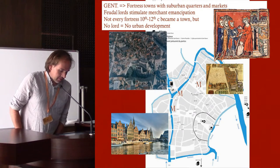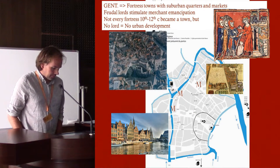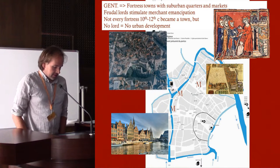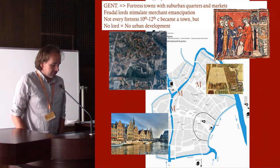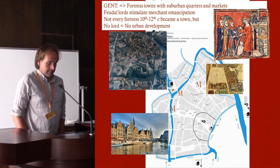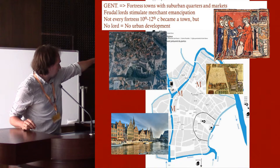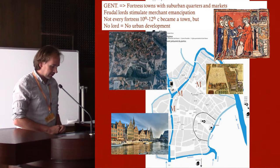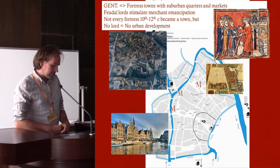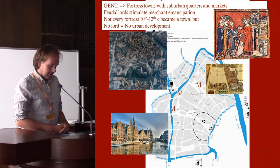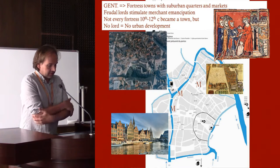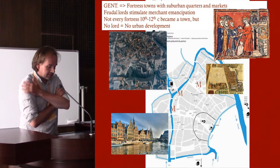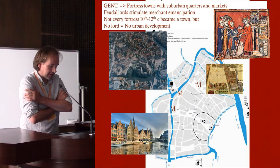In Ghent, the same thing seems to happen. In the 10th to 12th century, Ghent is just like Bruges — a kind of fortress town with a palace construction, the Gravenkasteel, visible top left. All the markets are situated at the entrance of roads leading to the Gravenkasteel. It seems clear that the feudal lord, the Count of Flanders, stimulated merchant activity and merchant emancipation.